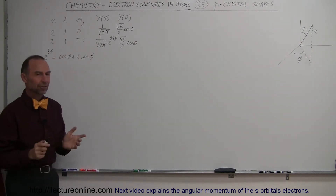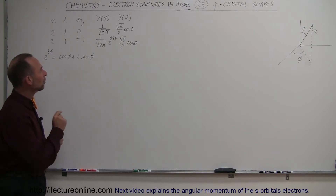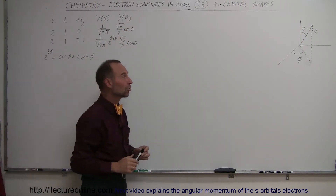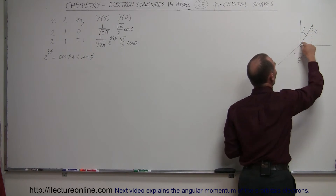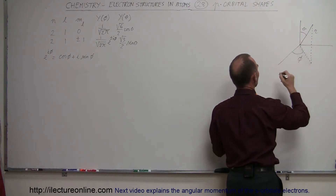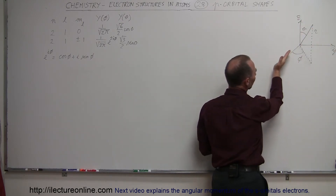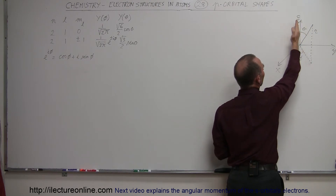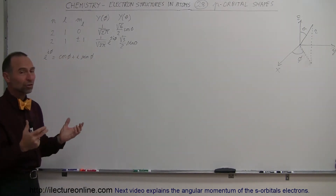The p-orbitals are a little bit different, and so we need to take a look again at the quantum mechanics solutions of the Schrödinger equation. We're finding solutions in the phi direction and the theta direction. In the three-dimensional world, when you want to use spherical coordinates, we use R as the distance from the origin to the point in question. We use phi as the angle from the x-axis to the point in question around the x-y plane, and theta as the angle from the z-axis down to the point in question.